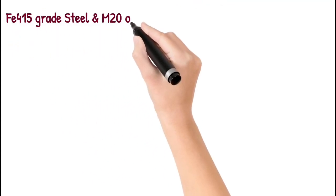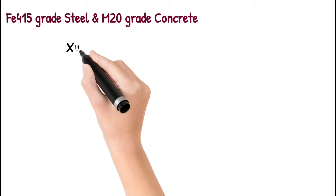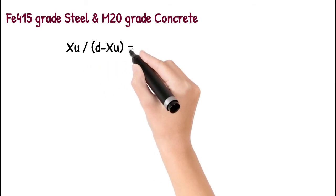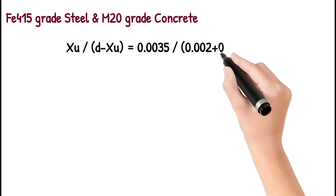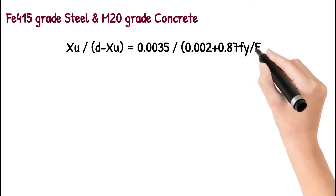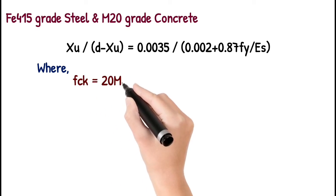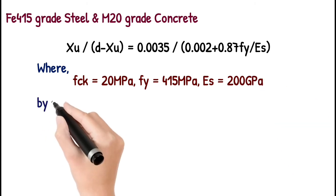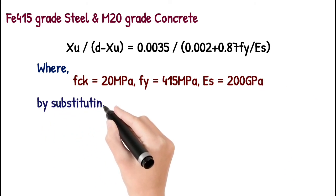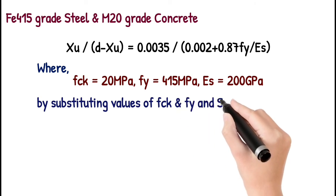We get Xu divided by d minus Xu equals 0.0035 divided by 0.002 plus 0.87 fy divided by Es. Or Xu divided by d minus Xu equals 0.0035 divided by 0.002 plus 0.87 times 415 divided by 2 times 10 raised to 5.